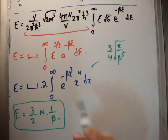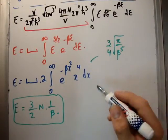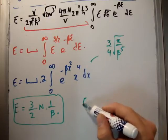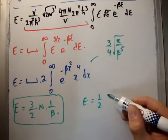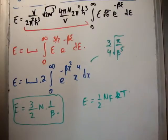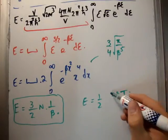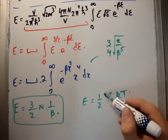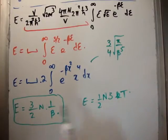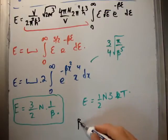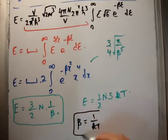This is for classical particles. We know that for classical particles the equipartition theorem says the energy equals one-half N f k T, where f is the number of degrees of freedom. Comparing both results, we find three-halves N k T equals three-halves N times one over beta. This suggests that beta equals one over k T. We call this the thermodynamic beta.